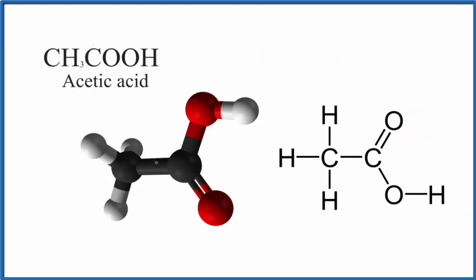Acetic acid is very soluble in water, and that's because it's a polar molecule. The reds — the oxygens — we see them here and here, and they're very electronegative. That means they'll have a partial negative charge. The hydrogen will be partially positive, and this side over here in general will be positive as well. So we have negatives and positives — we have poles. It's a polar molecule.